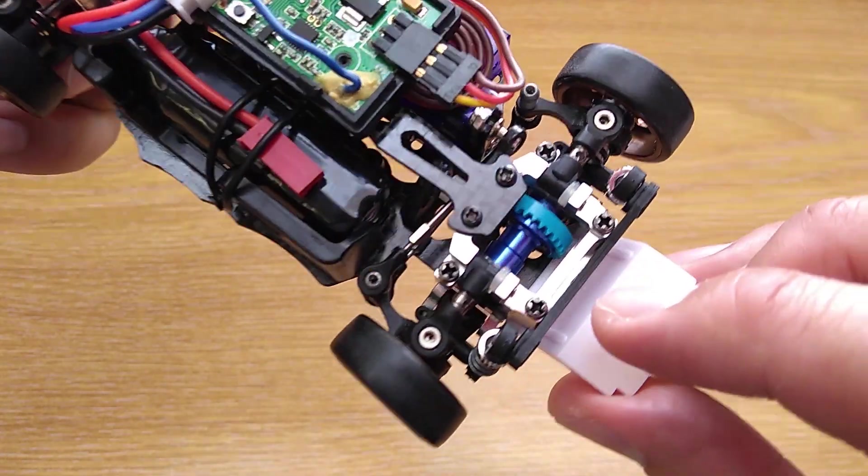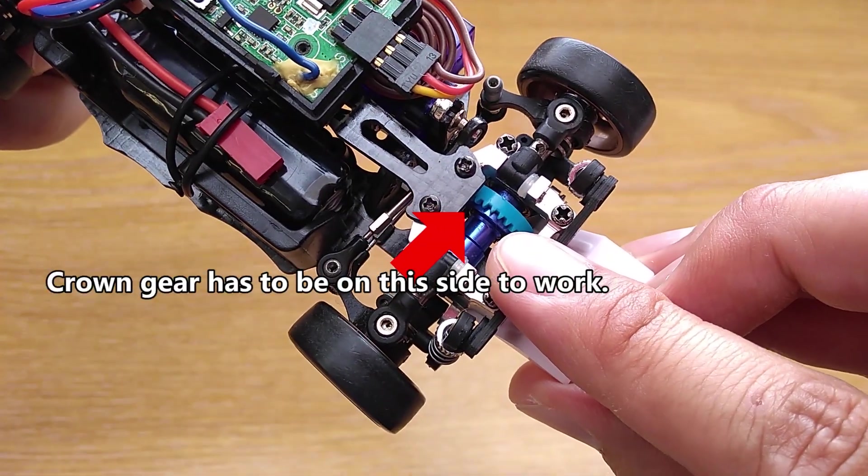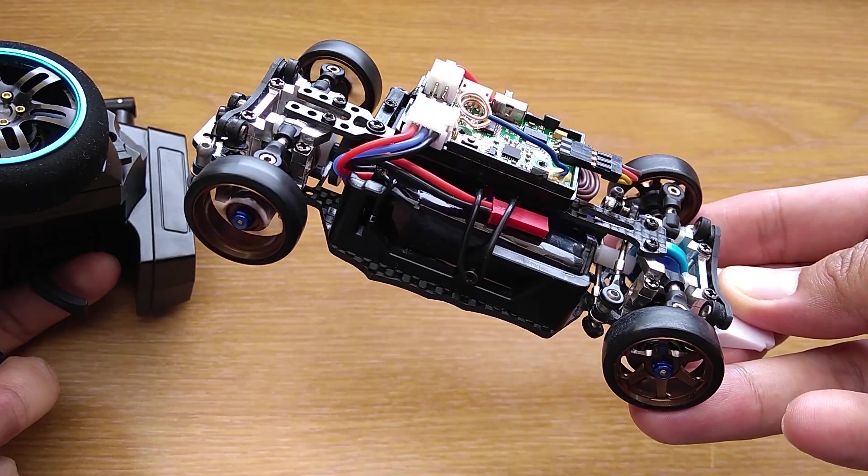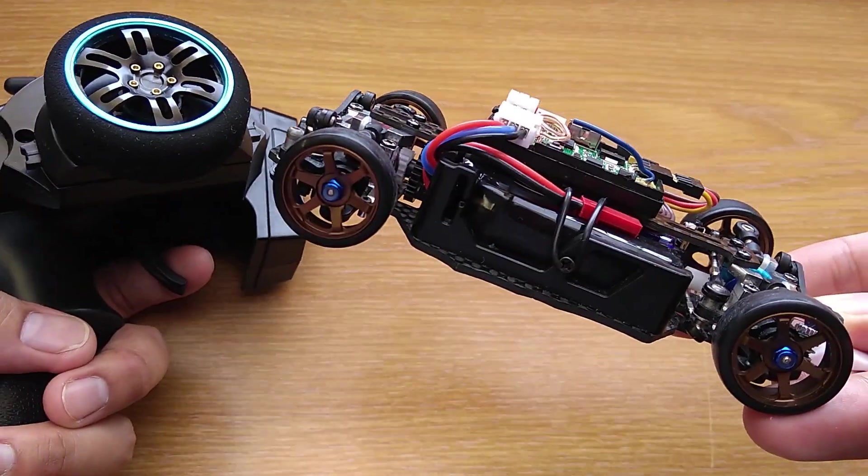However, there are some cautions when using it. You can only use it in the front because it only works in one direction. And because of the rolling effect, you will lose the brake and reverse on the front wheels.